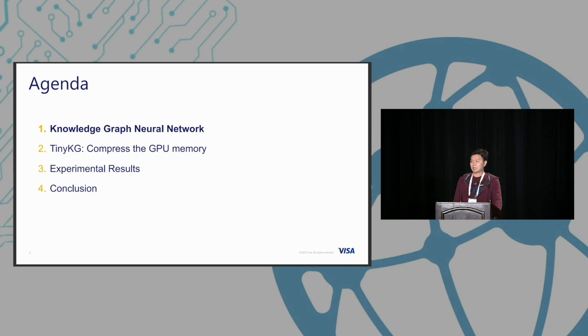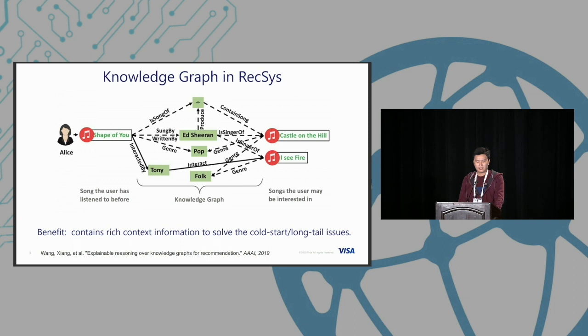Knowledge graph is very popular in recommender systems. Compared to the original user and item bipartite graph, the knowledge graph contains rich context information. For example, it will not only have the user and item, we also have some of the item's attributes.